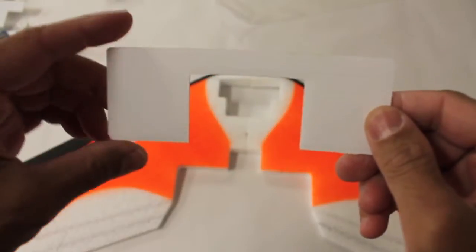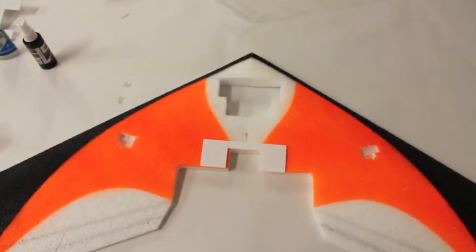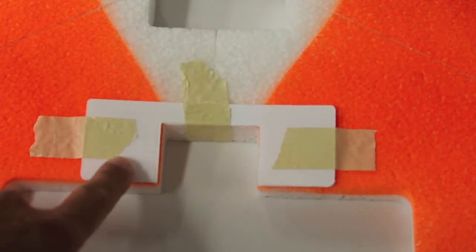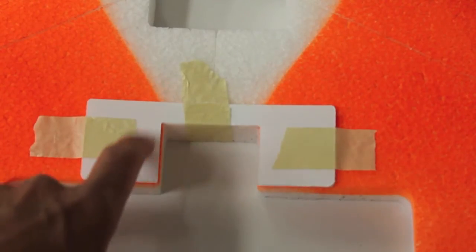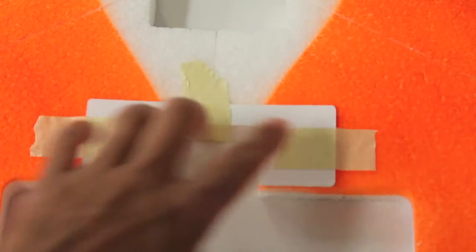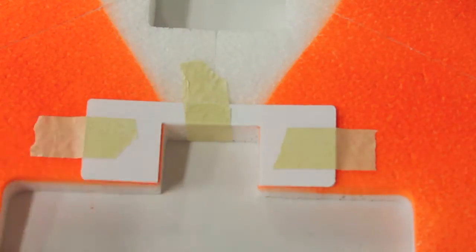Here you can see the motor mount plate, and we're actually going to mount it with some medium CA glue to the top of the wing. I put medium CA on the underside of this, stuck it down, and then I used masking tape just to keep it nice and snug.